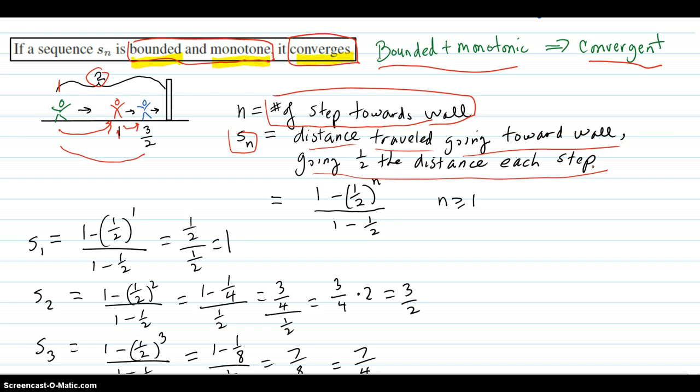We will show later with a geometric series that these are the terms: one minus a half to the n, divided by one minus a half, starting with n greater or equal to one.